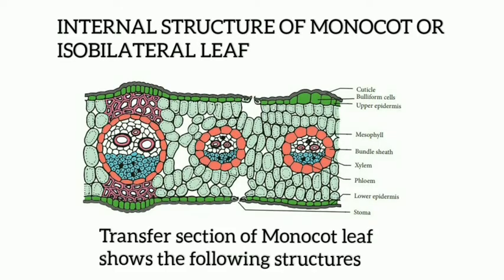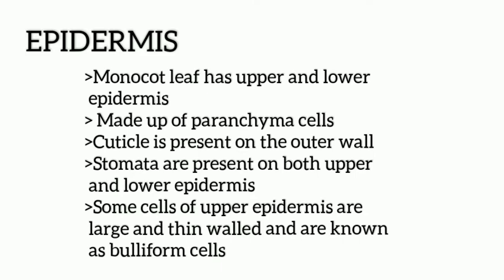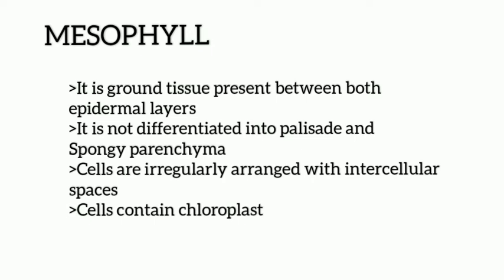Next we move on to the internal structure of monocot or isobilateral leaf. The transverse section of monocot leaf shows the following structures, as seen in the picture given. Epidermis: monocot leaf has upper and lower epidermis, made up of parenchyma cells. Cuticle is present on the outer wall. Stomata are present on both upper and lower epidermis. Some cells of the upper epidermis are large and thin-walled and are known as bulliform cells. Mesophyll is not differentiated into palisade and spongy parenchyma. Cells are irregularly arranged with intercellular spaces and contain chloroplasts.